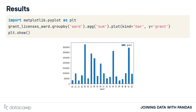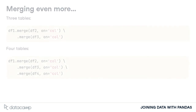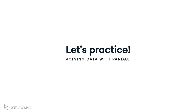We can now sum the grants by ward and plot the results. Some wards have received more grants than others. We could continue to merge additional tables as needed. We stopped at three, but if needed we could continue to add more. The code here shows the pattern you will follow as you merge more tables. Now let's practice merging multiple tables.